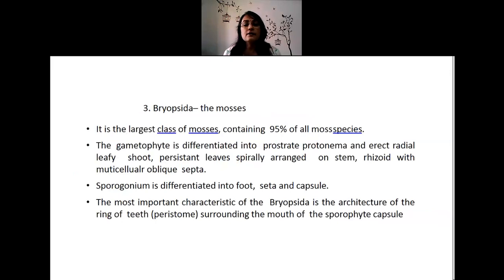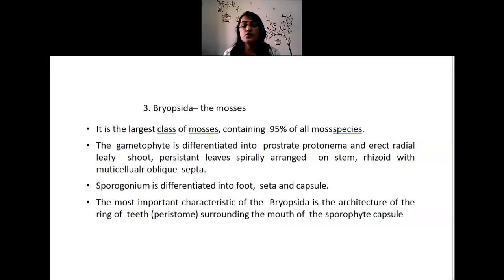The third class, Bryopsida — the mosses — contains about 95 percent of all bryophytes. The gametophyte plant body is differentiated with a prostrate protonema and an erect radial leafy shoot with persistent leaves spirally arranged on a stem-like axis. Rhizoids are present to fix it to the substratum. The sporophyte is well differentiated into seta and capsule. A most characteristic feature is the dispersal of spores from the capsule by the mechanism of peristome action.